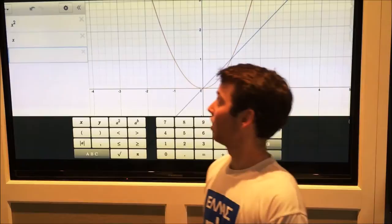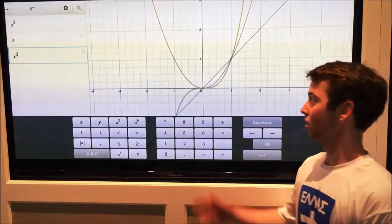When we multiply x squared by x, we get x to the third, which as Desmos will show, is an odd function.